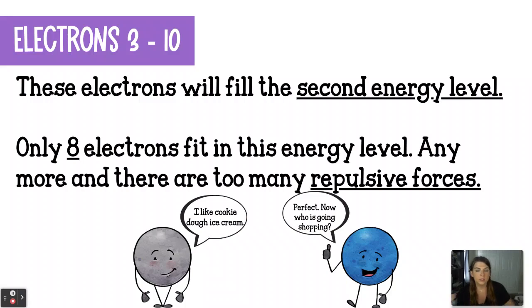So the next set of electrons are going to move into the second energy level. This will be electrons three through ten. That's eight electrons in total. If you count the number of elements across period two on the periodic table, there's eight. You have lithium, beryllium, boron, carbon, nitrogen, oxygen, fluorine, and neon. Eight electrons will fit in that second energy level. Only eight will fit because anything more than that and there's too much repulsion going on between the electrons.